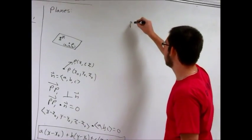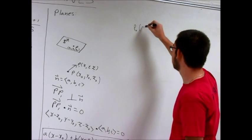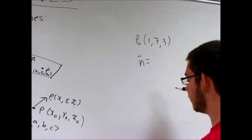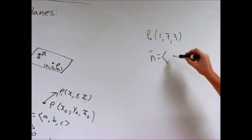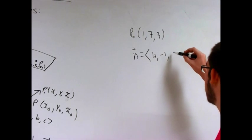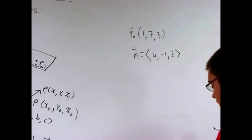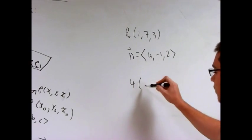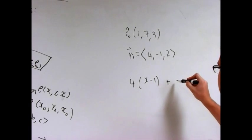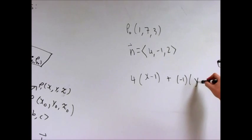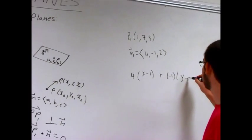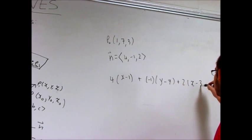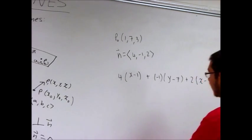Let's say our initial point is 1, 7, 3. And we know that is normal to the direction 4, negative 1, 2. And so the equation of this plane would be 4, x minus 1 plus negative 2, y minus 7 plus 2, z minus 3 equals 0, based on this equation back here.